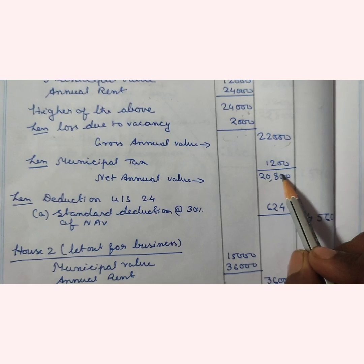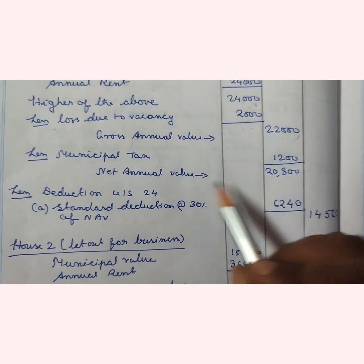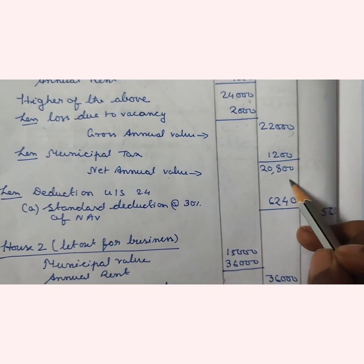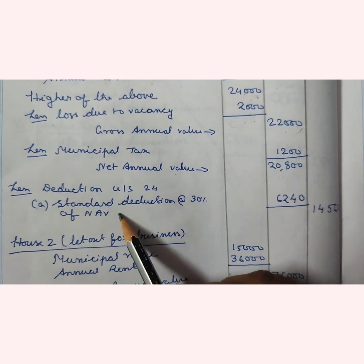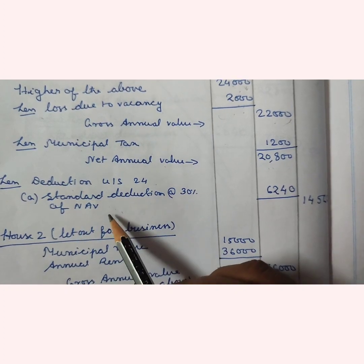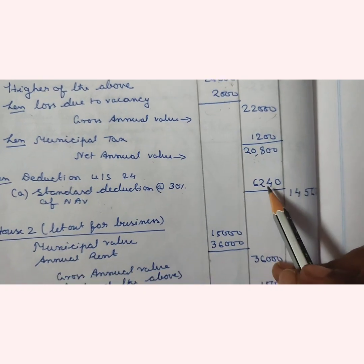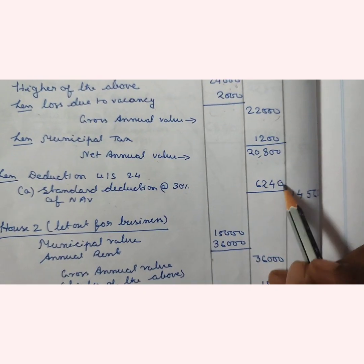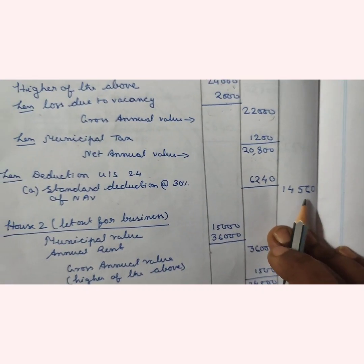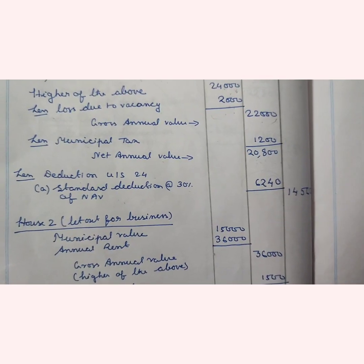Municipal tax is ₹1,200 — nothing is mentioned whether it is paid or not, so we assume it is paid by the owner and the entire amount is deductible. After deducting ₹1,200 from gross annual value ₹22,000, we get net annual value (NAV) of ₹20,800. There is only one deduction: standard deduction under Section 24(a) at 30% of NAV. 30% of ₹20,800 is ₹6,240. After deducting ₹6,240, income from House 1 is ₹14,560. No interest on loan is mentioned, so no further deduction.